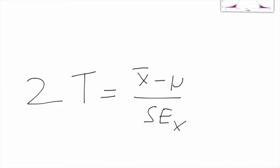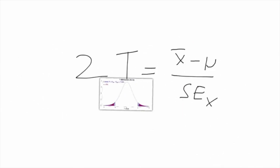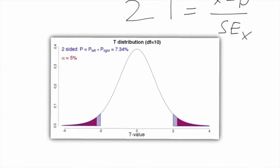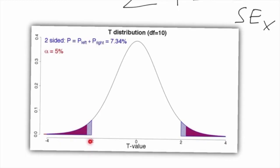That's visible right here in this graph. You can see both the value minus two and positive two. The corresponding p-value is the surface under the distribution, shaded blue in the graph.